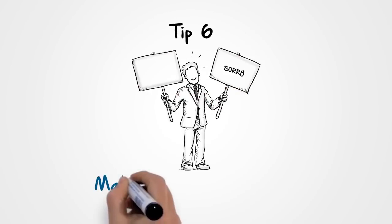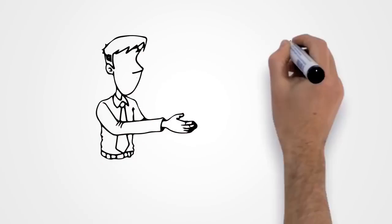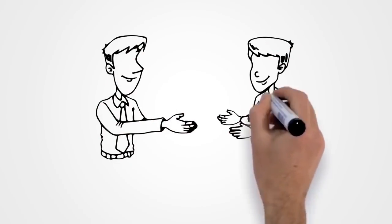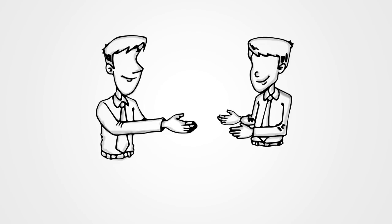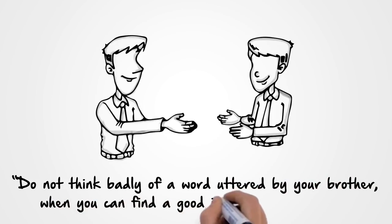Tip 6: Make excuses for others. The sunnah encourages us to think good of others and make excuses for them whenever possible. In fact, Umar said, 'Do not think badly of a word uttered by your brother when you can find a good interpretation for it.'